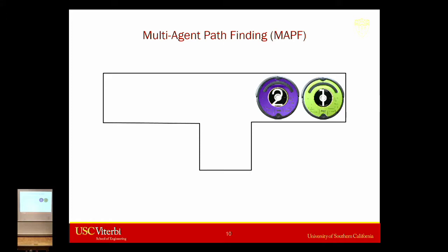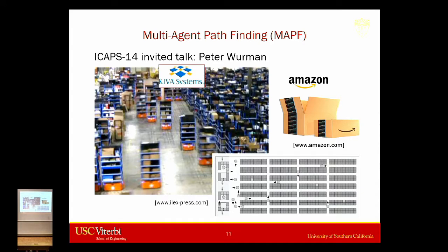From an application perspective, this problem is really interesting because there are compelling applications. At ICAPS 2014, Pete Bowman talked about Amazon warehouses. These are automated warehouses where all items are stored on racks. If you order something from Amazon, a robot goes into the storage area, picks up the whole rack, brings it to pick-and-place stations, the human operator grabs the item, puts it in a box, and the robot takes the rack back. It's an autonomous system with pretty narrow corridors where two robots can barely pass.